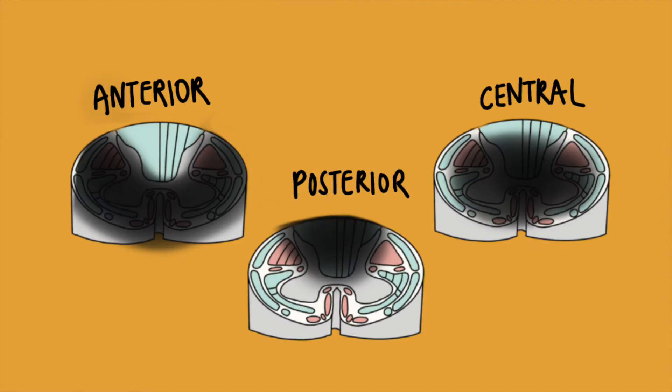If you're having trouble remembering how any of these three injuries presents, just picture a cross section of the spinal cord, and then you can figure out from there what areas are going to be more affected. When you're seeing these patients in real life, there's a lot of variability to these injuries, which is going to affect the presentation.